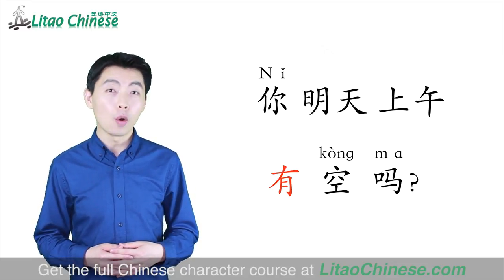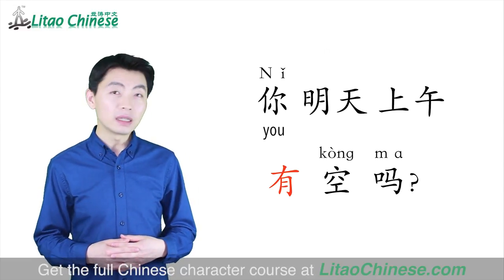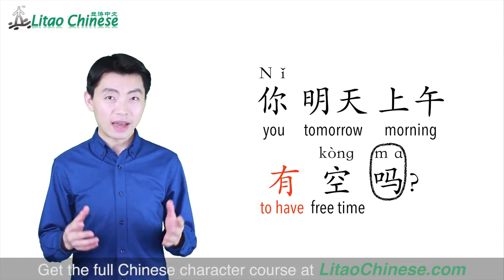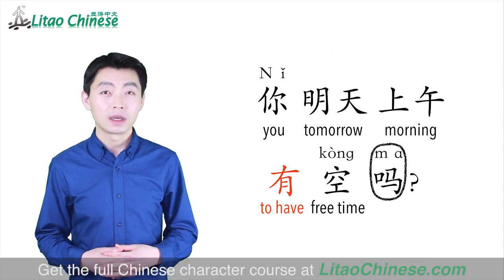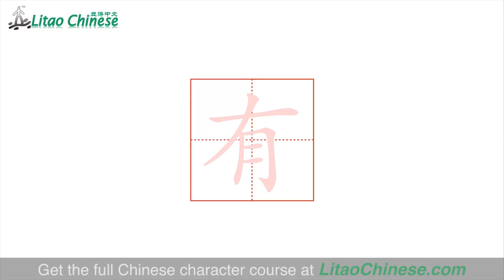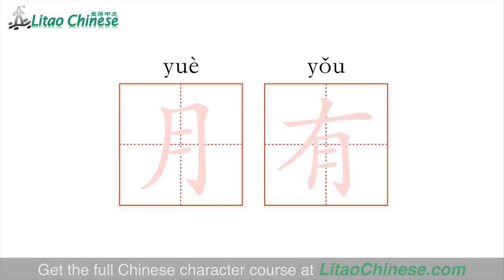The second sentence: 你明天上午有空吗? 你 means you in singular. 明天上午有空吗 means are you free tomorrow morning? Here is the correct stroke order of 有. Write the upper part first: 横, 撇, then the lower part: 竖, 横折, 横, 横. Six strokes in total. Please notice that the first stroke of 月 by itself is 撇, but the first stroke of 月 in the character 有 is not 撇 — it's 竖.